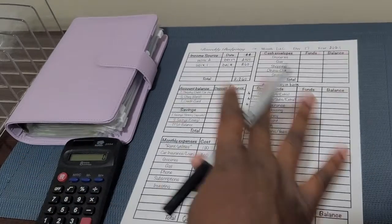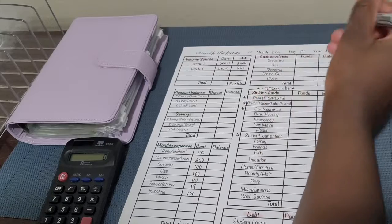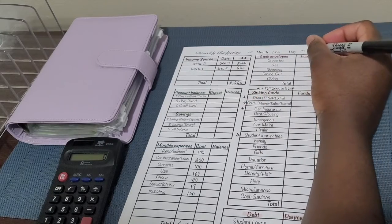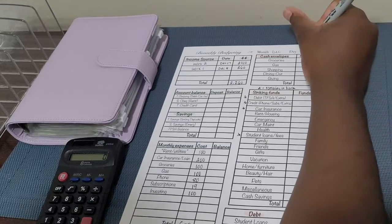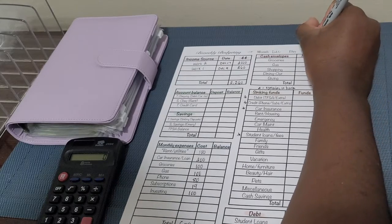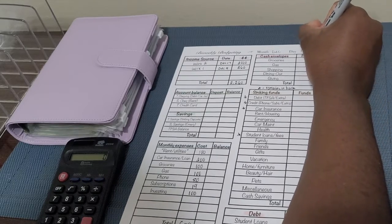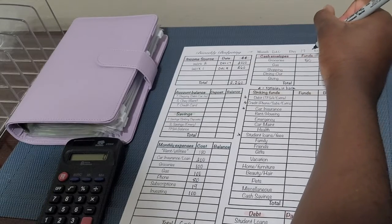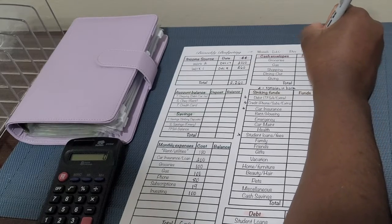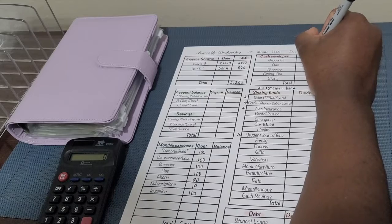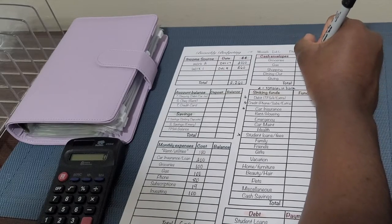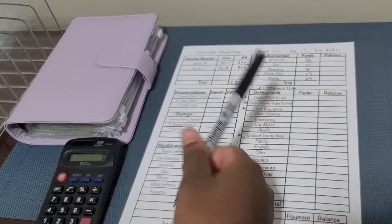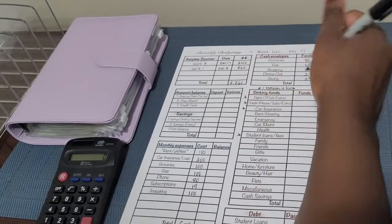Okay, and then we're going to move on to the cash envelopes. So basically it's going to be more or less the same amounts that I've been putting in. So groceries, I hope you can see that, so $50. Gas $50, shopping I'm giving myself $50, dining out is $25, and giving is going to be $25. So this should be $200.